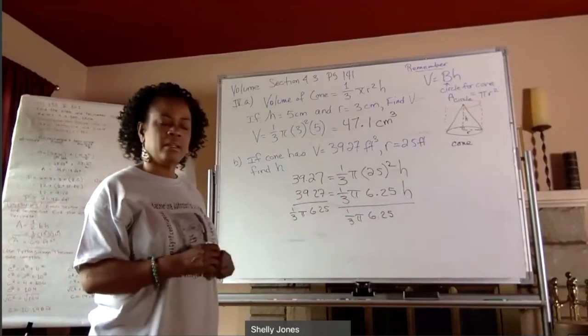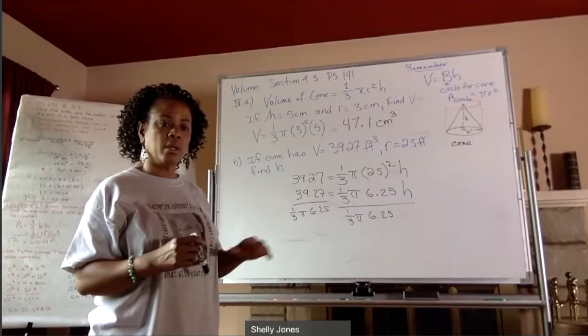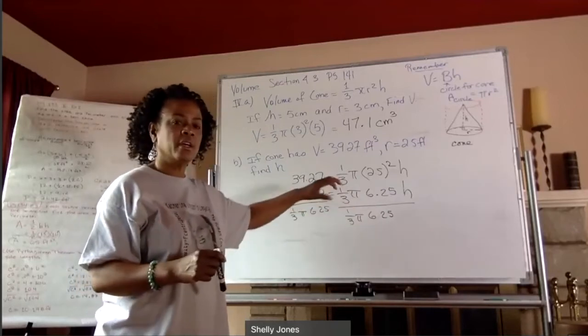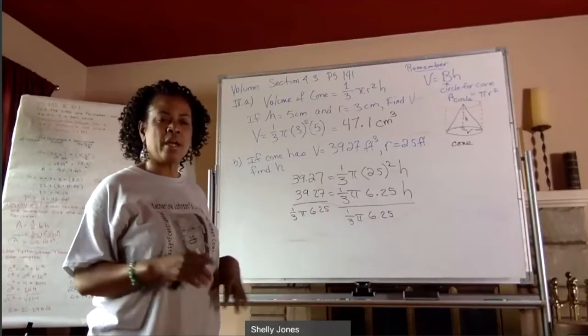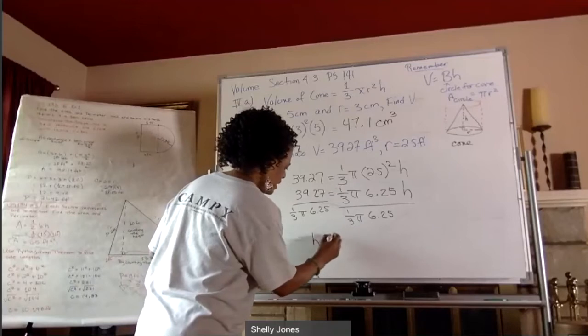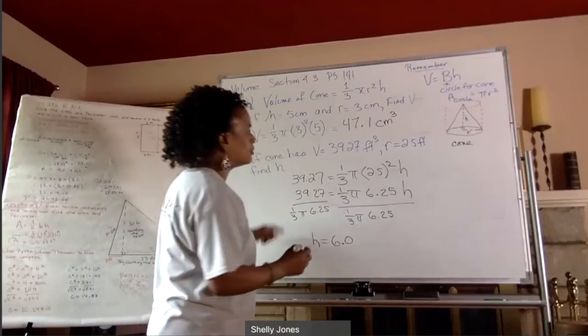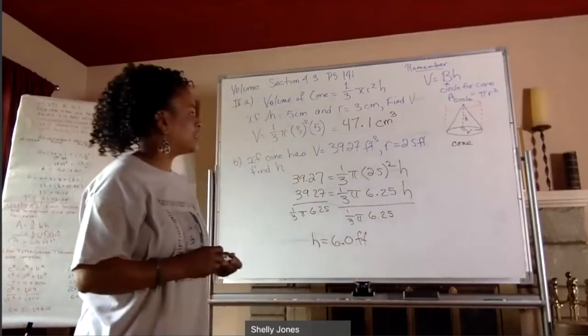But the way I did it, because if you do it that way, you're probably going to round off over here, and then divide by your already rounded off answer. So I try not to round off until the very end. So my height ended up being 6.0 feet and that's it for that.